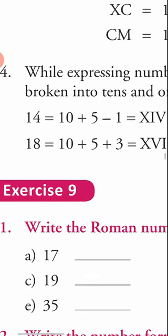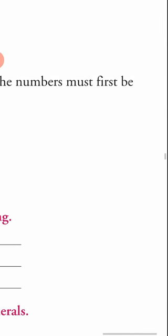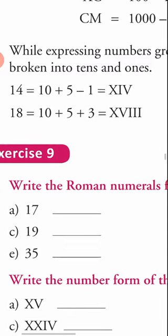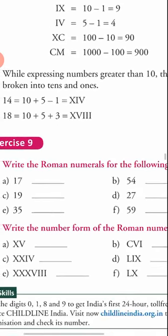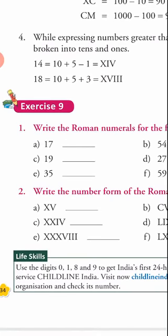The fourth and last rule: when expressing numbers greater than 10, the number must first be broken into tens and ones. For example, 14 is 10 plus 4. Ten is written as X, and 4 is written as IV — because 5 minus 1 also equals 4. So 14 is written as XIV.